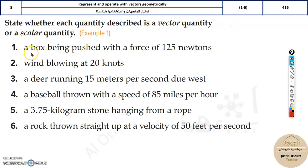Let's see the first question: a box being pushed with a force of 125 newtons. Whenever you're just doing some work, say for example 125 newtons, you're pushing a box, but the direction is not mentioned. So this will be just a scalar, whereas if a direction was mentioned, say due north or in some particular direction, then this would have been a vector quantity.